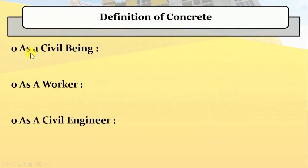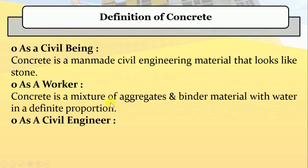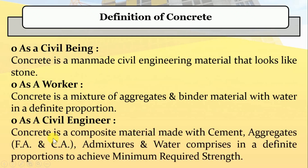How can we define concrete? For a civil being, concrete is a man-made civil engineering material that looks like stone and can be used for the construction of structures. For a worker or labourer, concrete is a mixture of aggregates and binding materials with water in a definite proportion. And for a civil engineer, concrete is defined as a composite material made with cement, fine aggregates, coarse aggregates, and water in a definite proportion, so as to achieve a minimum required strength.